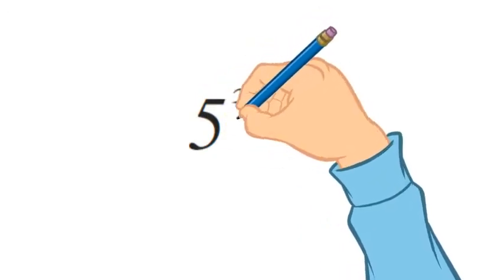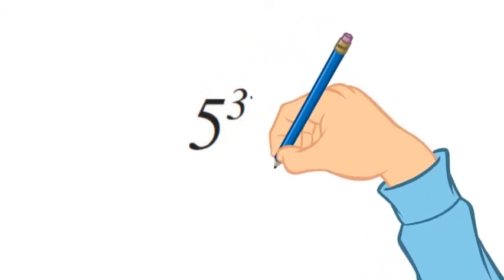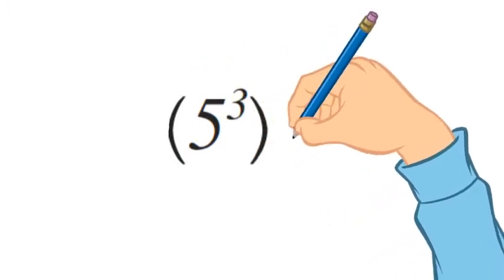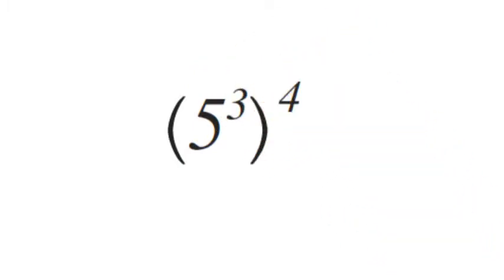5 to the 3rd is a power, and if we take a power of that, so we put it in parentheses and raise it to a power, this is a power of a power.